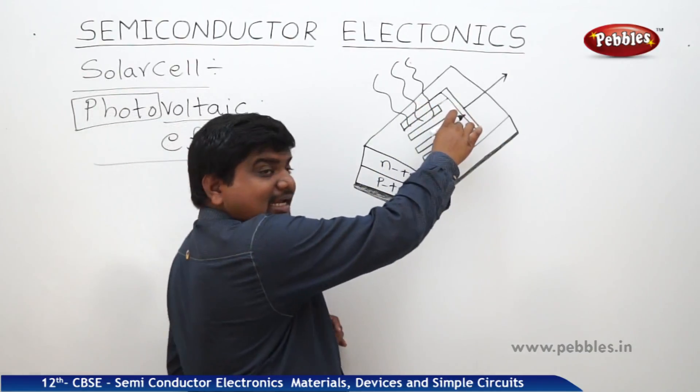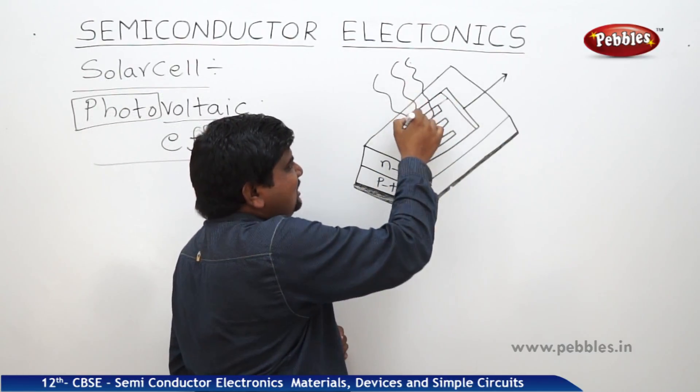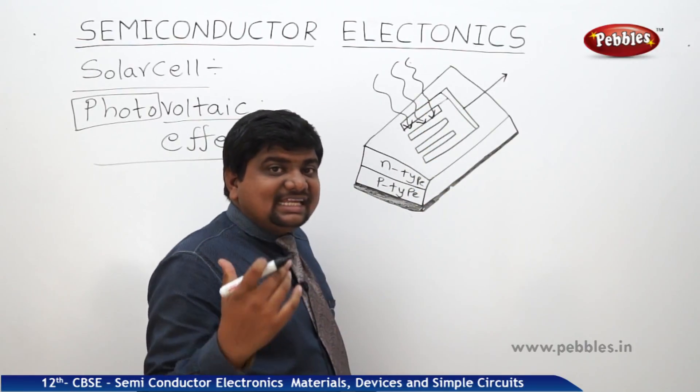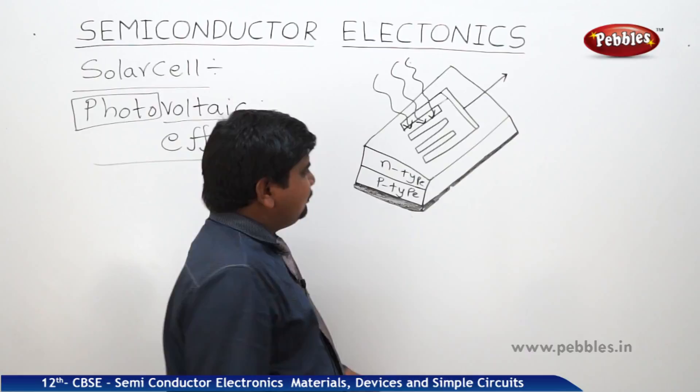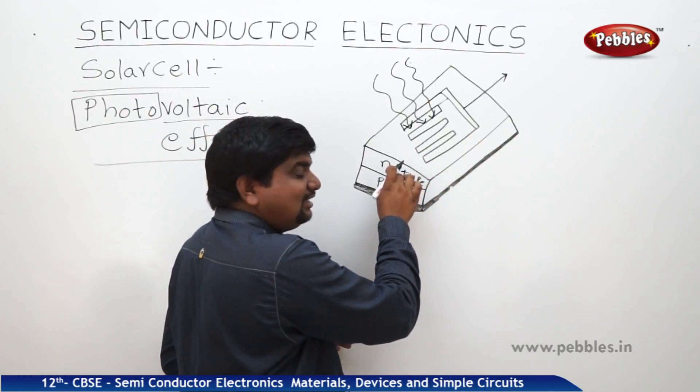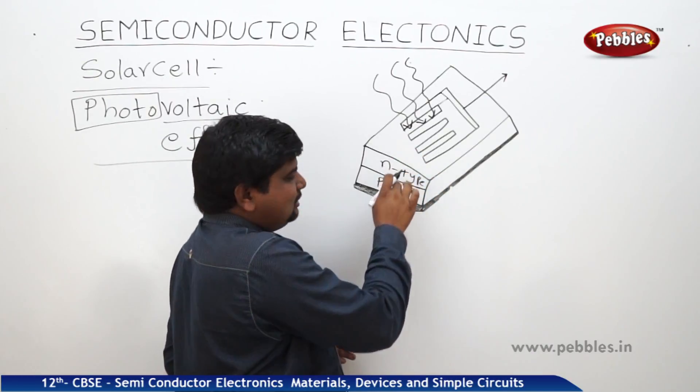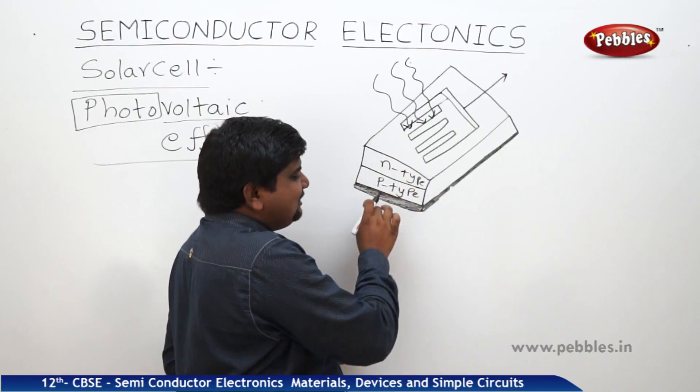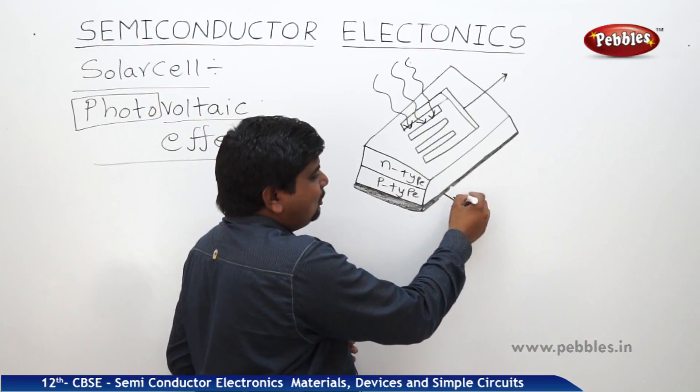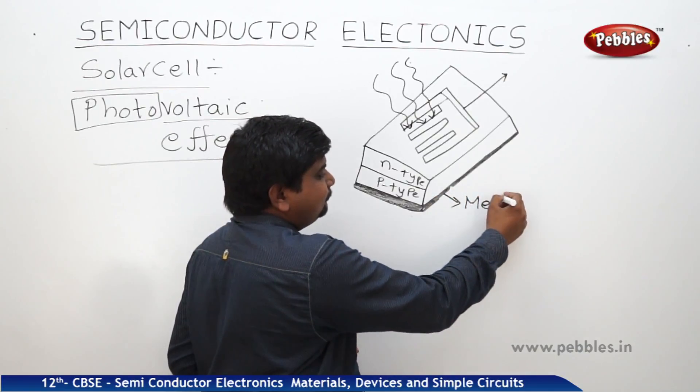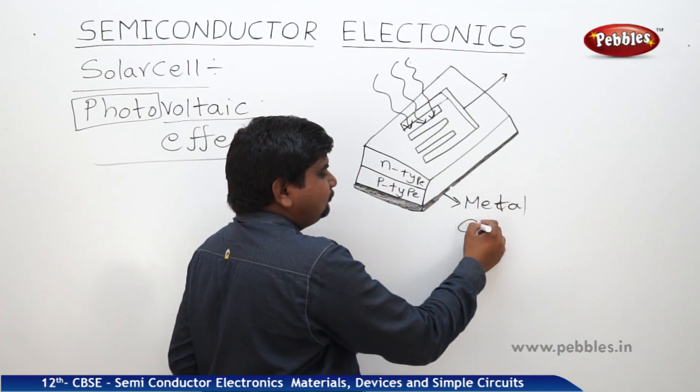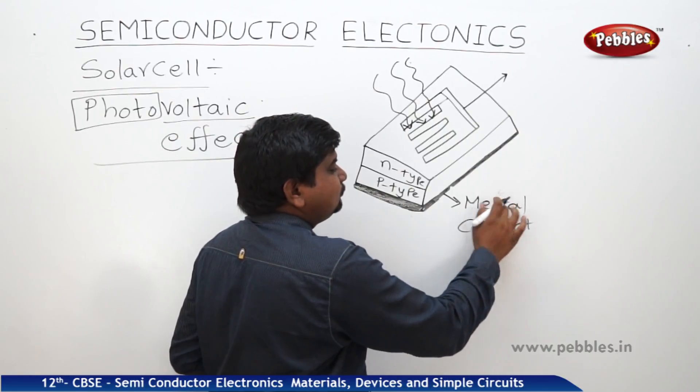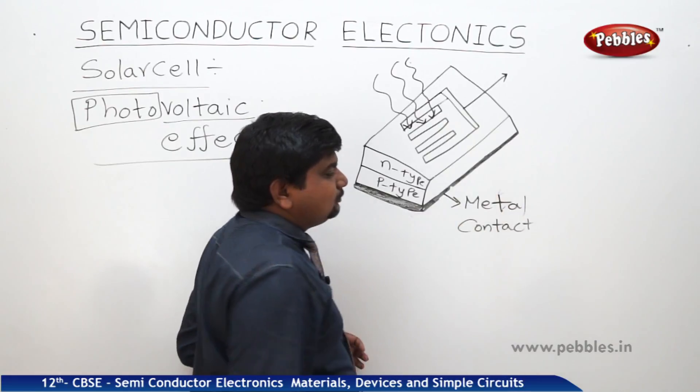So, this is the metal plate and this metal plate is just focused to the sunlight or any source of light which has high intensity. So, this metal plate is in contact with the n-type of the semiconductor and lower part is P-side and this P-type is connected to the metal contact. The metal contact.